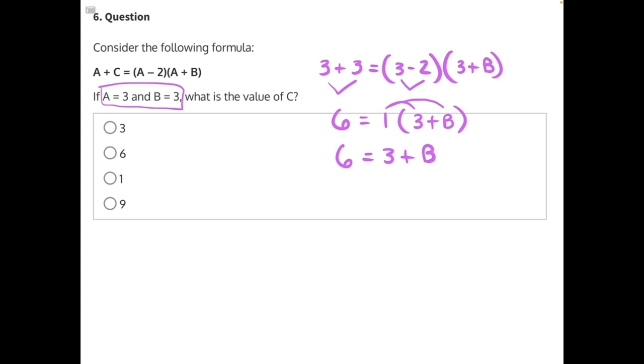Now, to isolate B, we need to use opposite operations. 3 is being added to B, so to get rid of that 3, move it to the other side, we need to subtract. Subtraction is the opposite of addition. These will cancel out. 6 minus 3 will give us 3 equals B, making A our correct answer.